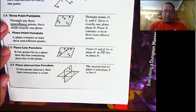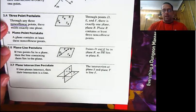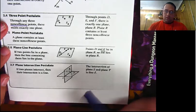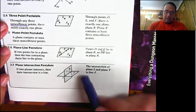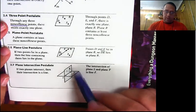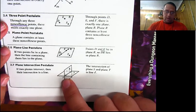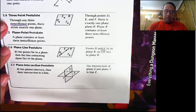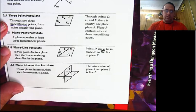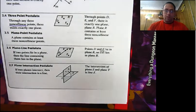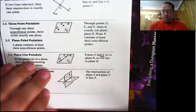The last postulate here is the plane-intersection postulate, and it says if two planes intersect, then their intersection is a line. Here we have plane S and plane T, and we see that they intersect right here at line L. So the intersection of plane S and plane T is line L. That's not too bad — pretty simple stuff.